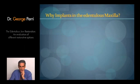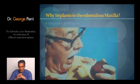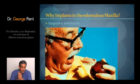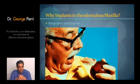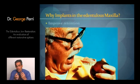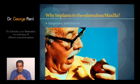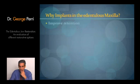So why would we consider implants in the edentulous maxilla? Certainly to improve retention. I've made dentures on very large maxillary ridges that had wonderful retention just as they are. But for a bit of security for the patient — and I know you've all had patients that you've made very good dentures with very acceptable retention — the patient still wanted more security. So dental implants can do that for the patient.